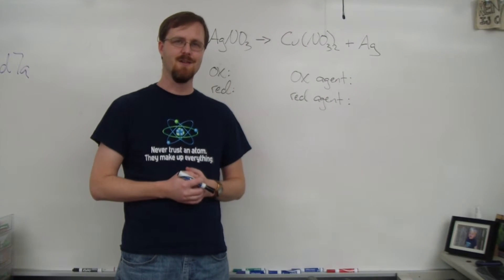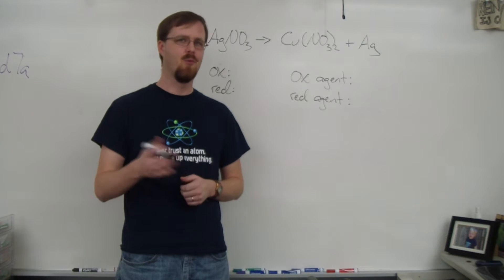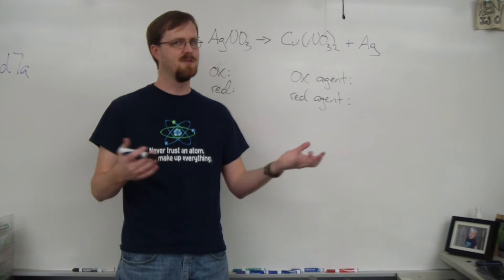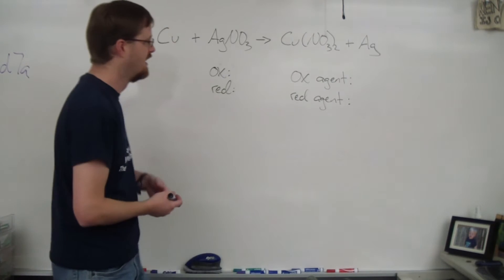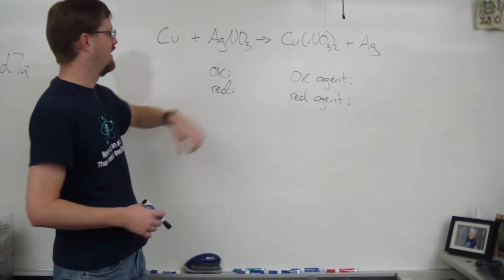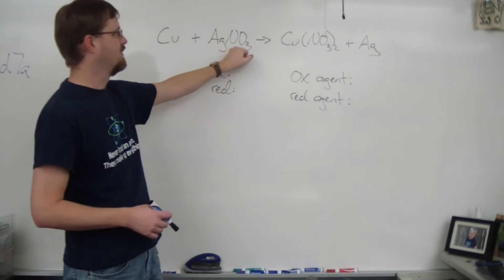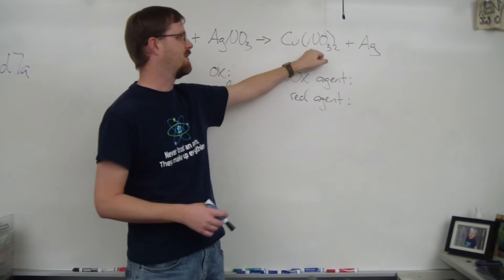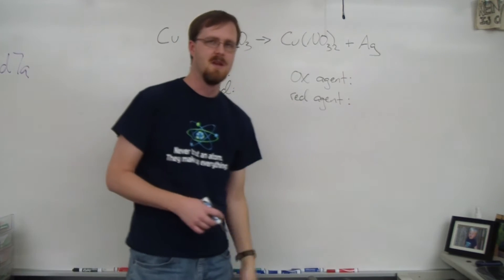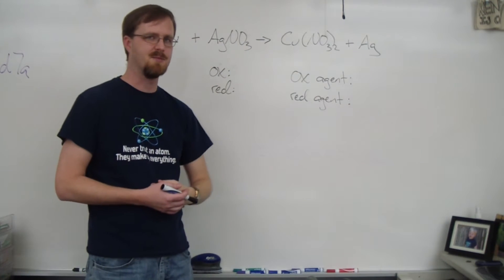Welcome back. Let's take a look at an example of how to identify what is being oxidized and what is being reduced in a redox reaction. Behind me, I have an equation: copper reacting with silver nitrate to give us copper(II) nitrate and silver. This is your basic single replacement reaction.